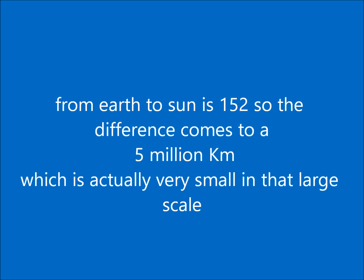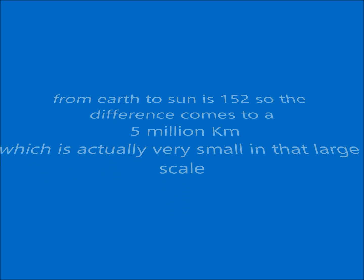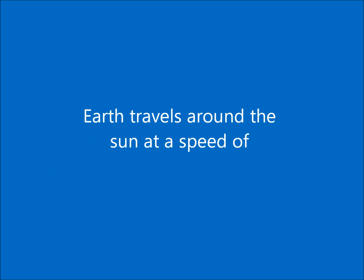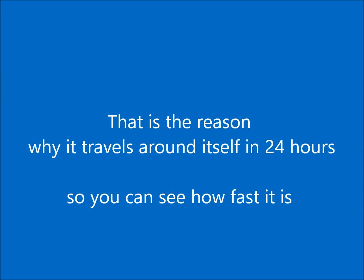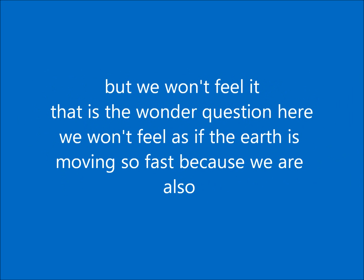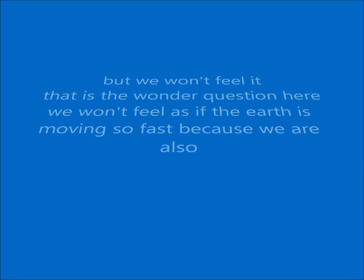The difference comes to 5 million kilometers, which is actually very small at that scale. Earth travels around the sun at a speed of one lakh seven thousand two hundred kilometers per hour — that's why it travels around itself in 24 hours. We don't feel the earth moving so fast because we are also part of the earth and moving along with it uniformly at that speed.